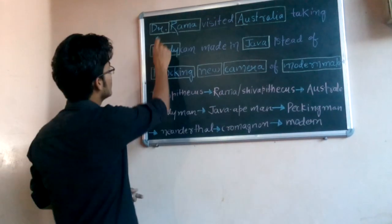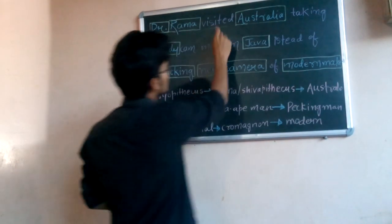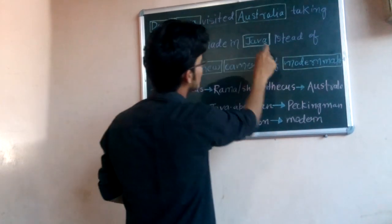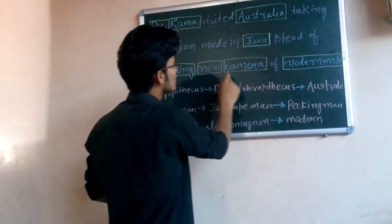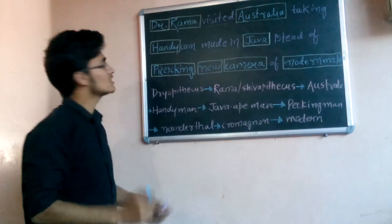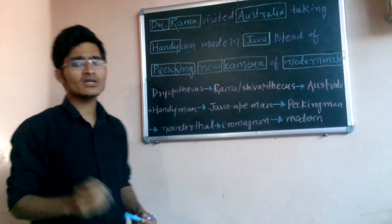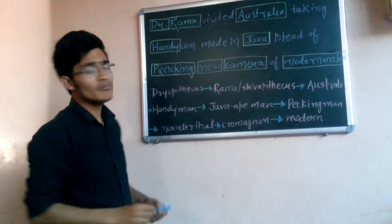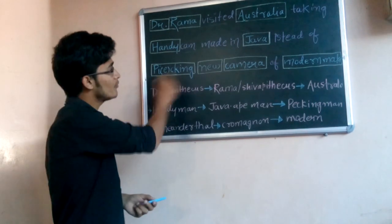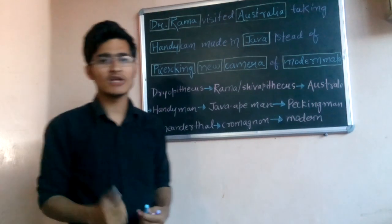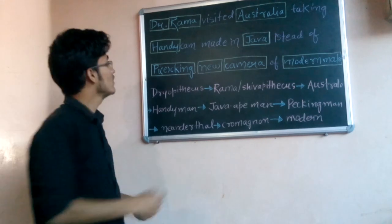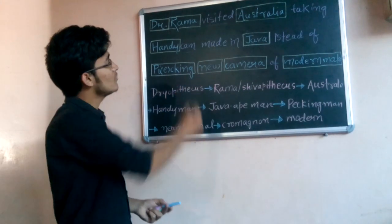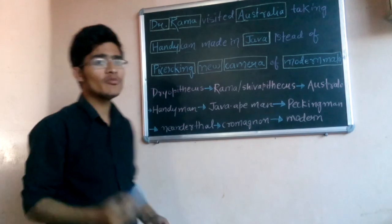The mnemonic sequence is: 'Dr. Rama visited Australia taking Handycam made in Java instead of picking new camera of modern make.' It's very simple — Dr. Rama visited Australia taking Handycam made in Java instead of picking new camera of modern make.